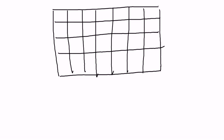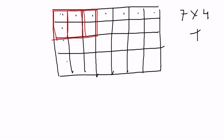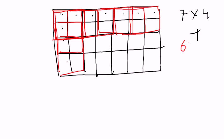You have to find the total number of squares within this given rectangle. Starting row-wise and column-wise with 1x1 unit squares: row-wise one through seven gives seven, and column-wise one through four gives four, so the count is 7x4. For 2x2 unit squares, row-wise we get six and column-wise we get three, giving a count of 6x3.